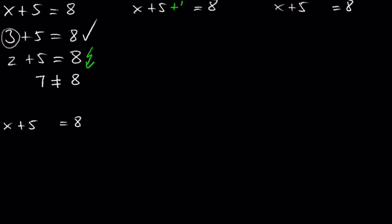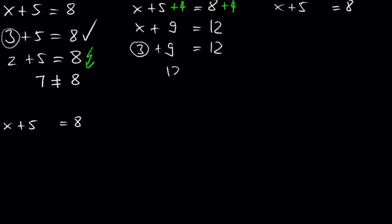If 4 is added to each side of the equation, the solution is still 3. Similarly, if negative 4 is added to each side of the equation, the solution is also still 3.